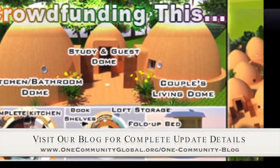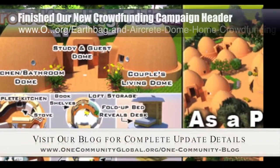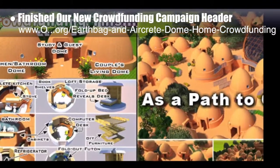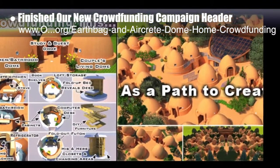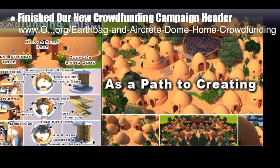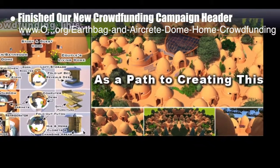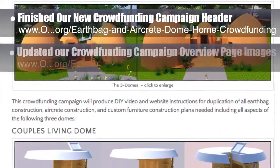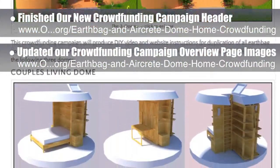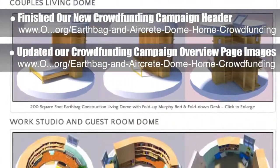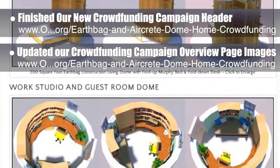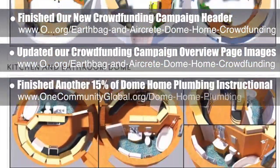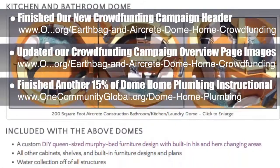This week the core team working on Highest Good Housing finished our new crowdfunding campaign header, which you can see here. The purpose of this header is to clearly depict what it is that we're creating and why. This header will be at the top of each of the 15 open source tutorial pages that are part of the crowdfunding campaign. We also updated our crowdfunding campaign overview page with expandable pictures of what we're intending for each of the three domes. Behind the scenes we finished another 15% of the dome home do-it-yourself plumbing instructional, bringing us to 30% complete.